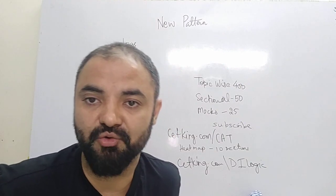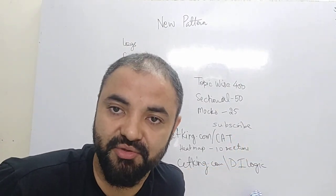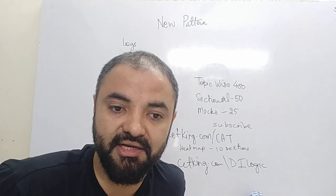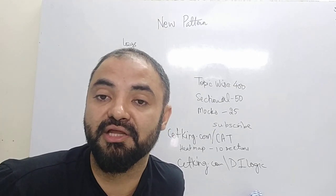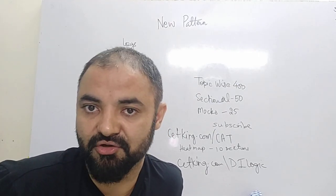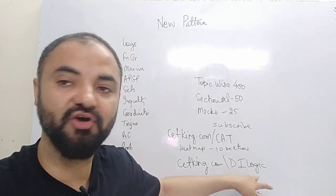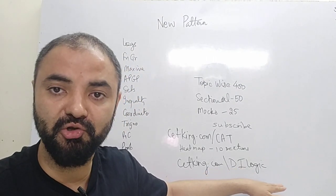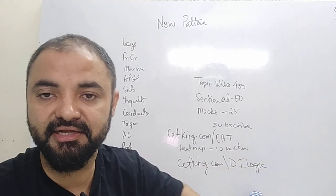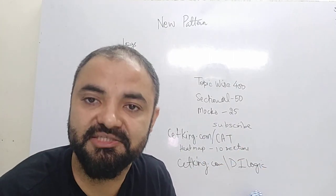You can download the last year's paper at cting.com/CAT to understand all the changes which have come in the exam, or you can also download the expected paper for this year's CAT on cting.com/CAT. So cting.com/DI-logic for logic-based DI, and cting.com/CAT for the expected paper.